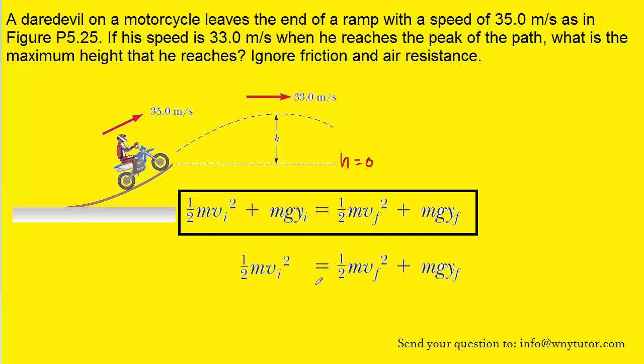So here is our simplified conservation of energy equation. We'll notice that the question is asking, what is the maximum height that the motorcyclist reaches? Well, that maximum height is represented in the diagram by h, but in the formula it would be this term right here, this y-final.